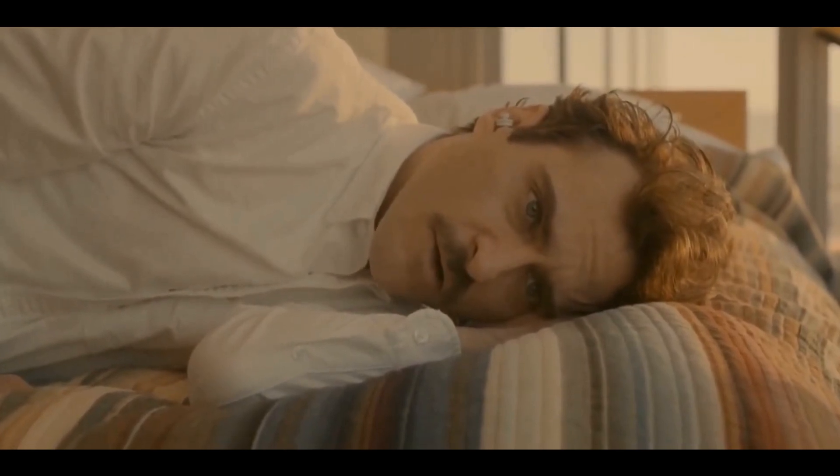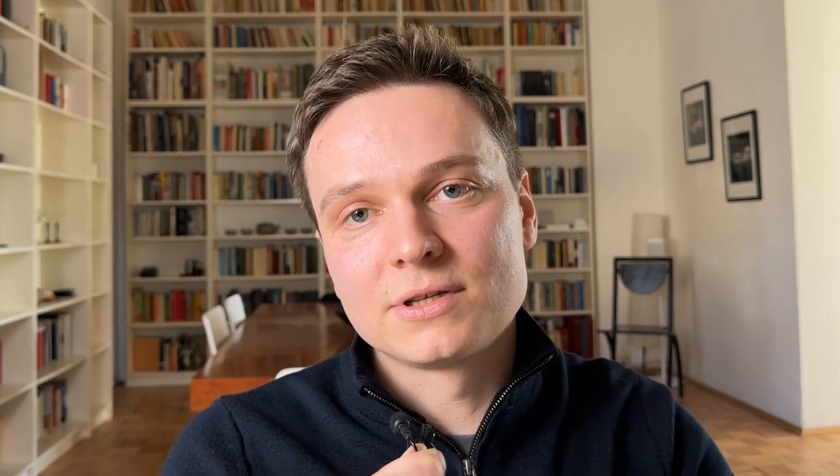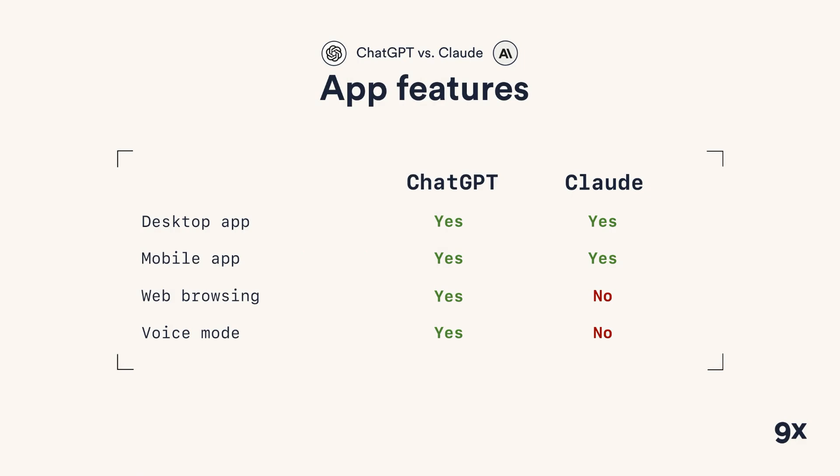The second huge functionality that ChatGPT offers and Claude doesn't is voice mode. When I'm on my phone, I'm actually always using voice mode. If you go beyond the awkwardness of talking to an LLM — like in the movie Her — this is a huge productivity unlock because you're able to have conversations much faster without using your hands to type. You can just freely walk, speak, and at the end get a full conversation with ChatGPT. This is one of the key features missing from Claude that prevents me from switching entirely to Claude. So when it comes to app functionalities, ChatGPT is still ahead, especially with web browsing and voice mode.